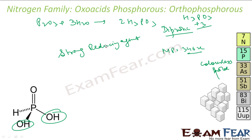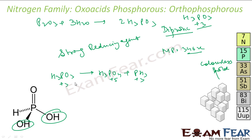The +3 oxidation state of phosphorus is not stable — it's an intermediate oxidation state — so it will disproportionate. H3PO3 will form H3PO4 and PH3. The oxidation state goes from +3 to +5 in H3PO4, so it actually disproportionates.